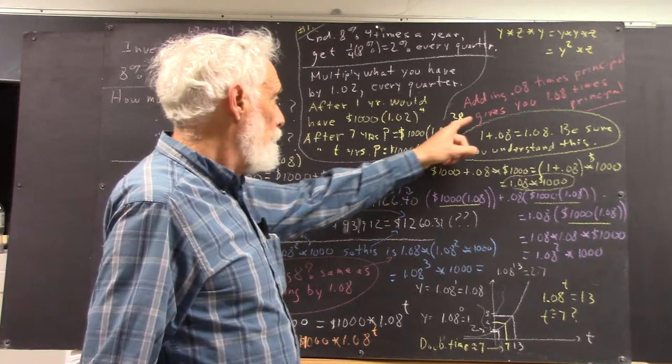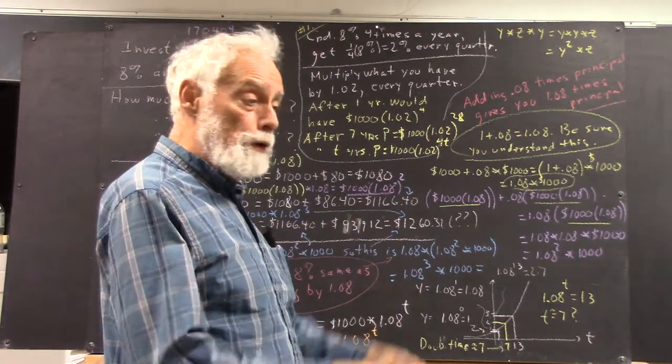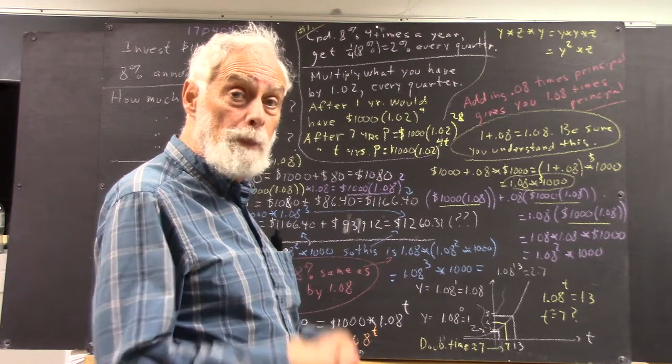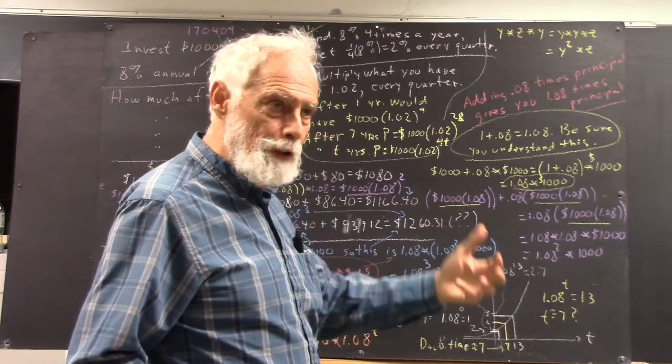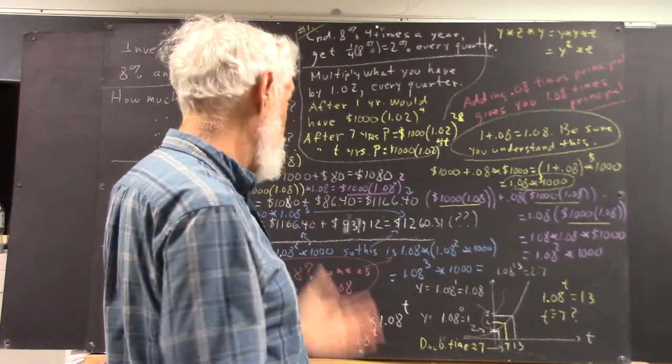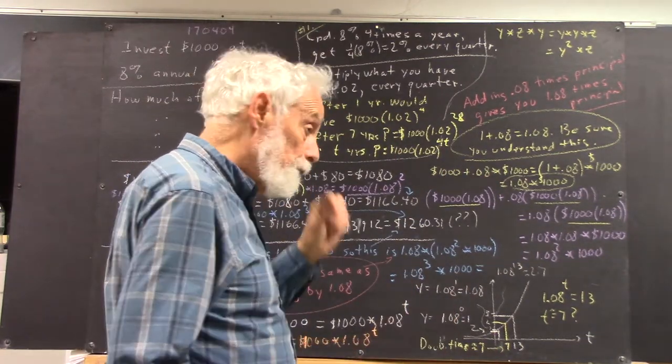Okay, so you're going to raise 1.02 to the 28th, because every quarter you multiplied whatever you had before by 1.02. Four quarters every year for seven years, you're going to do this 28 times. That should be very clear.